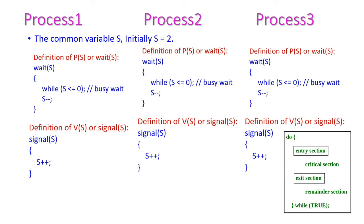Now let us see the working principle of counting semaphore, with S value equal to 2 — how more processes will access the critical section using counting semaphore. Initially S value is 2. Process 1 comes to the entry section. The while condition checks: S value is 2, which is positive, greater than 0. So it comes out of the while loop and automatically decrements S. Now S equals 1, because process 1 decremented the S value. Process 1 will enter into the critical section.